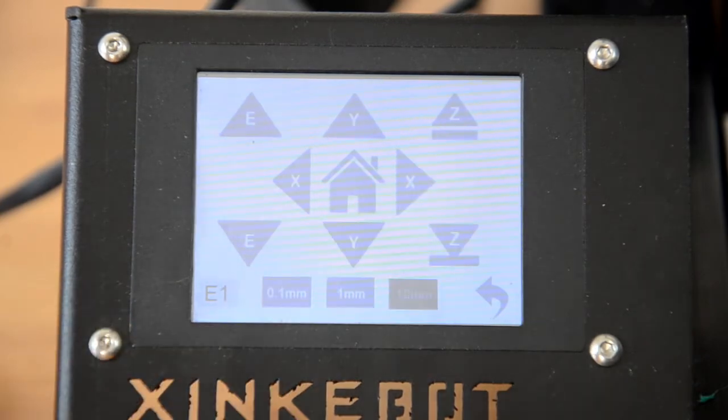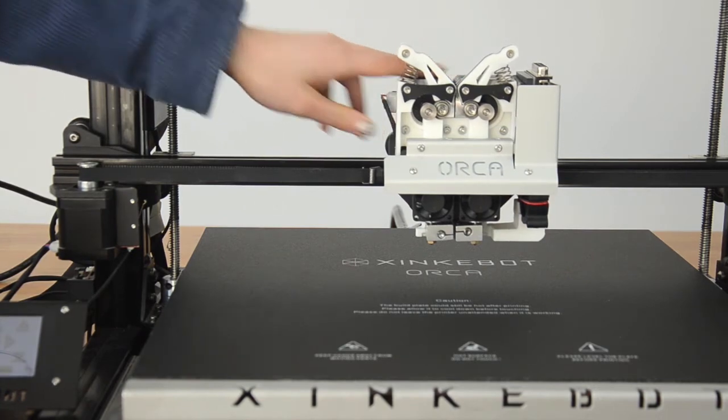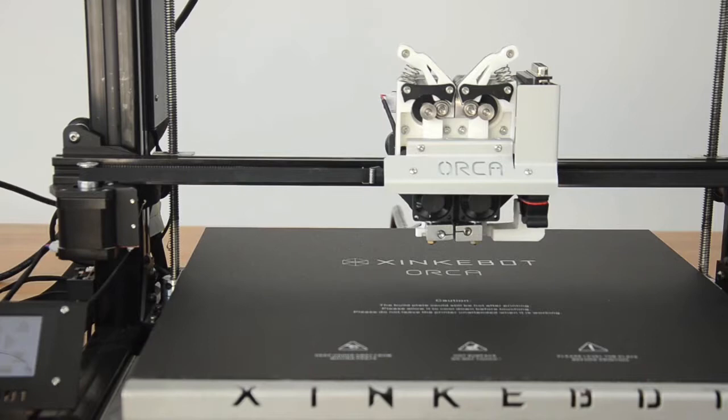You may find that the extruder cannot be moved or the couplings are difficult to turn. This is because the axes are locked after you lower the Z axis. To unlock them, you need to hit the pause button.